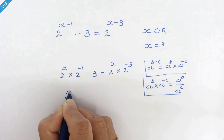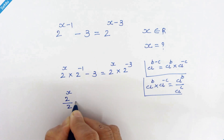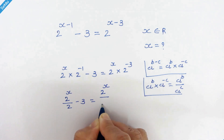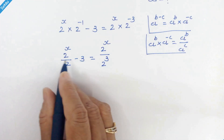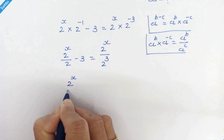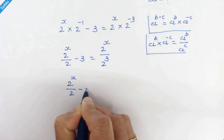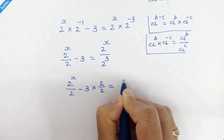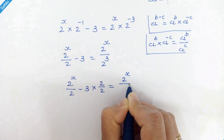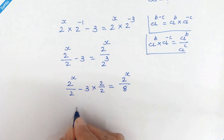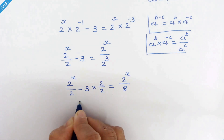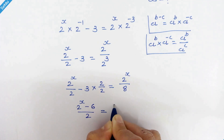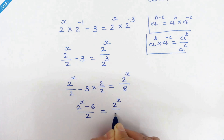So we have 2 raised to x upon 2 minus 3 is equal to 2 raised to x upon 2 cubed. Now we will take LCM. So we have 2 raised to x upon 2 minus 3 times 2 upon 2 is equal to 2 raised to x upon 8. In the next step, we have 2 raised to x minus 6 upon 2 is equal to 2 raised to x upon 8.